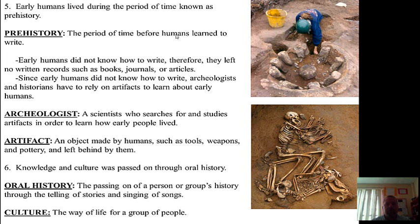Early humans lived during a period of time known as prehistory. Prehistory is the period of time before humans learned to write. Early humans did not know how to write. Therefore, they left no written records — no written records such as books or journals or diaries, letters, or newspaper articles.